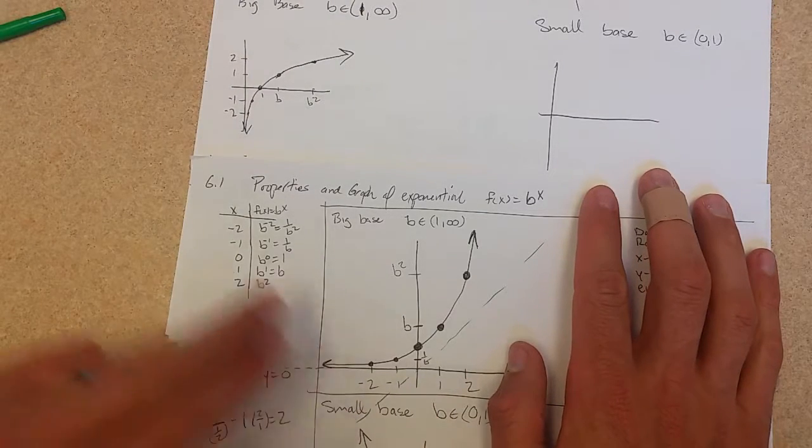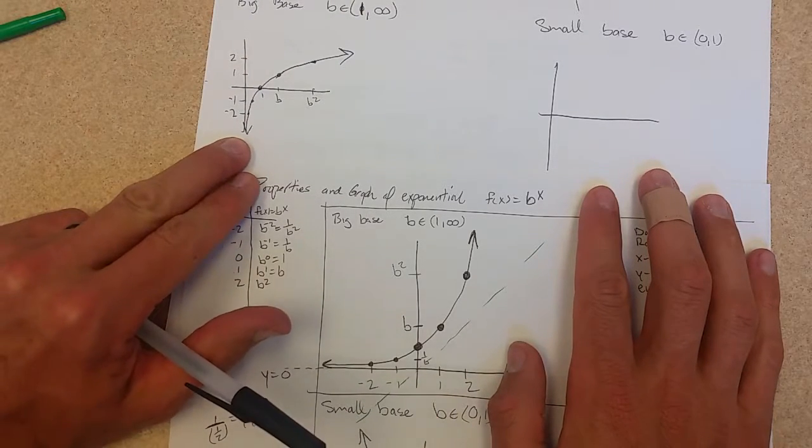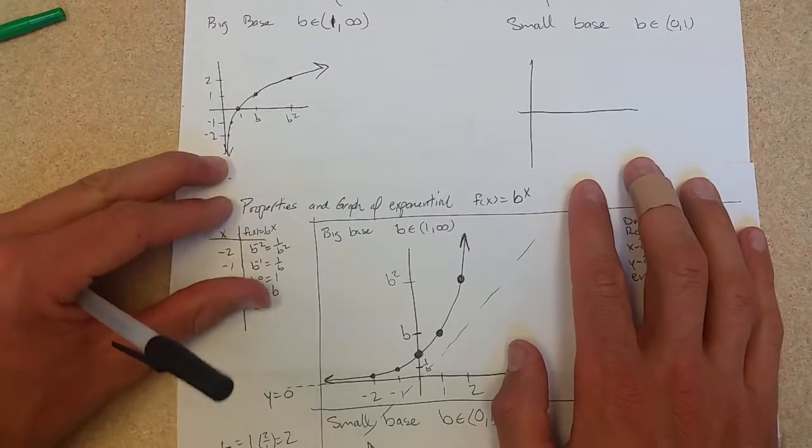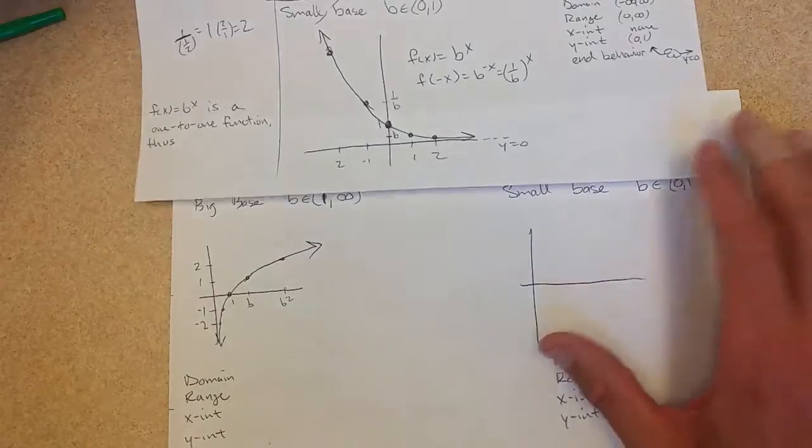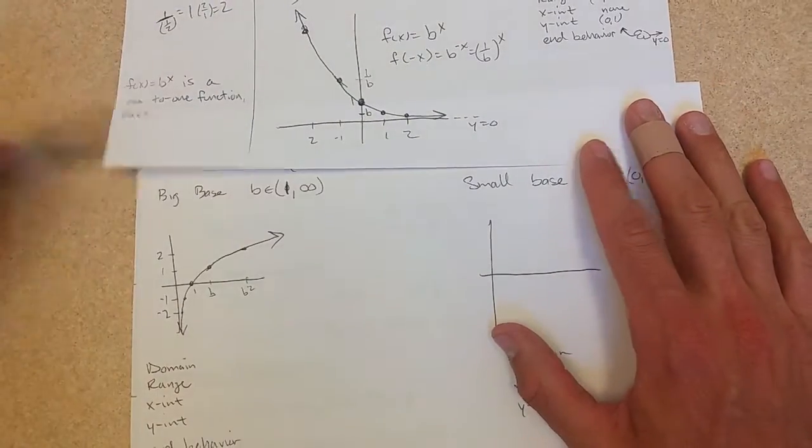Our horizontal asymptote I'm going to turn into a vertical asymptote. Now while we have this here, let's just go finish up the last small base and invert this.